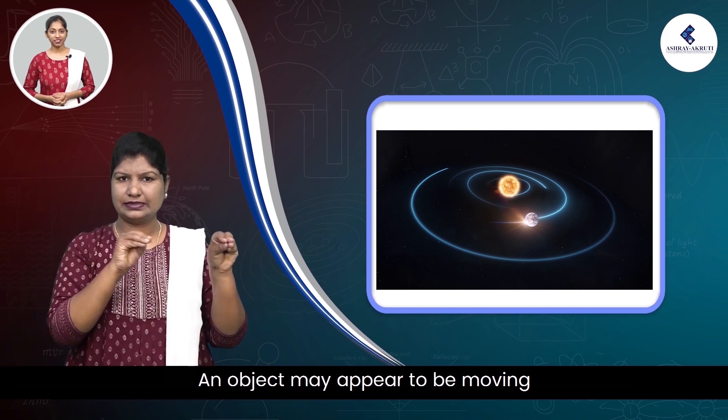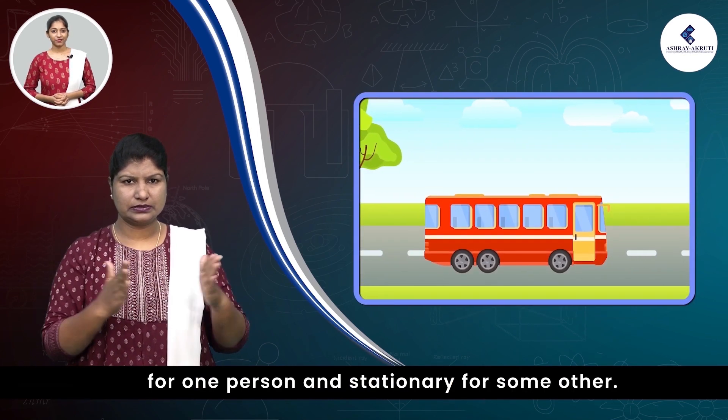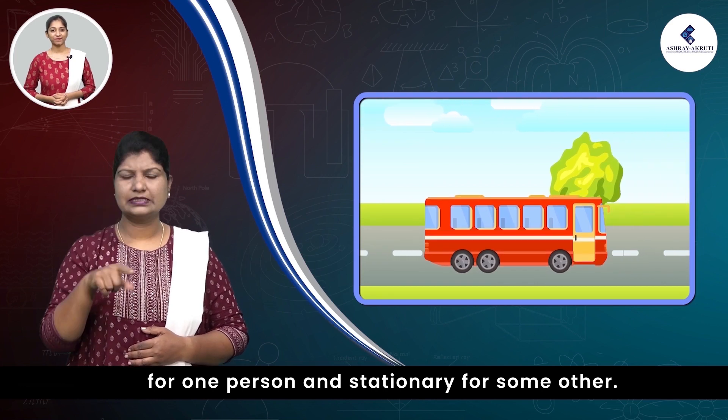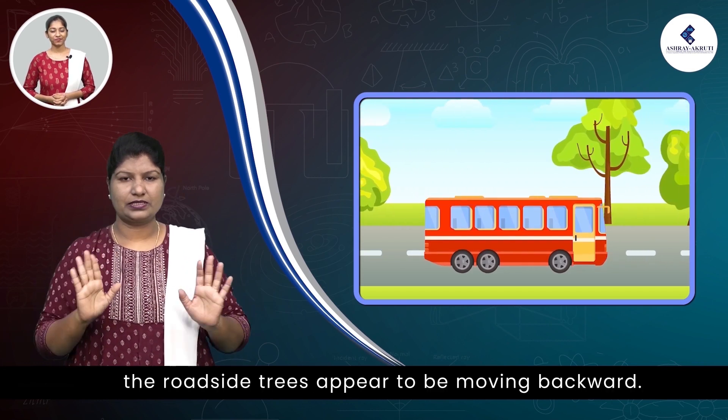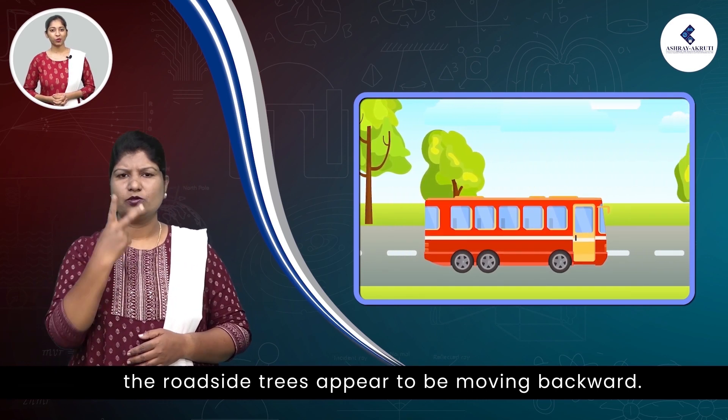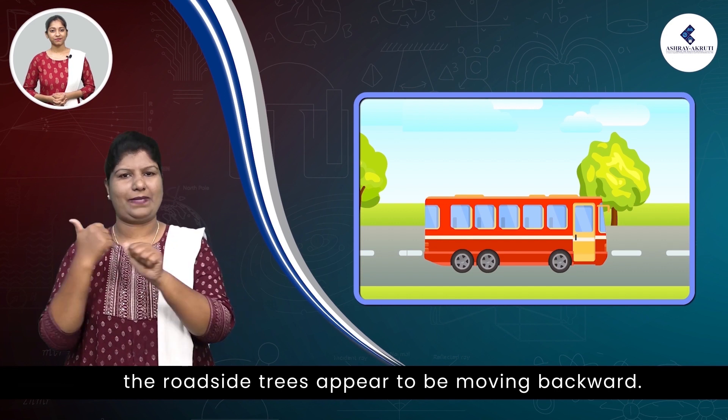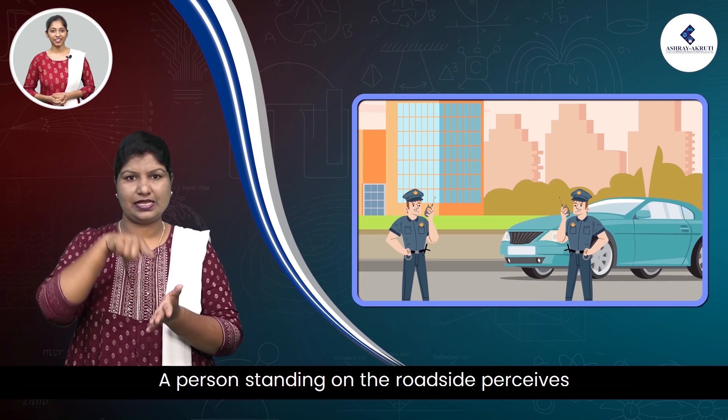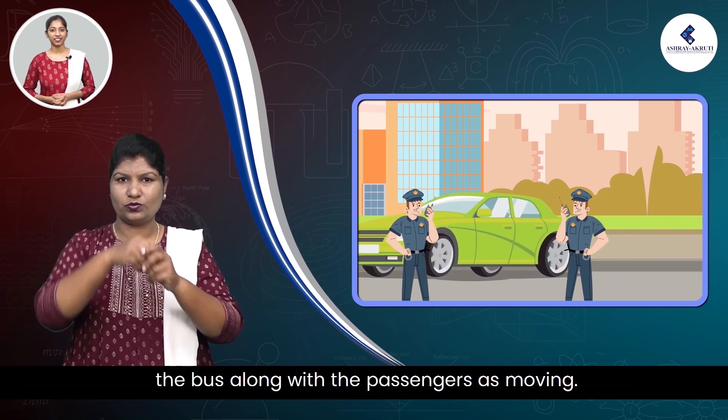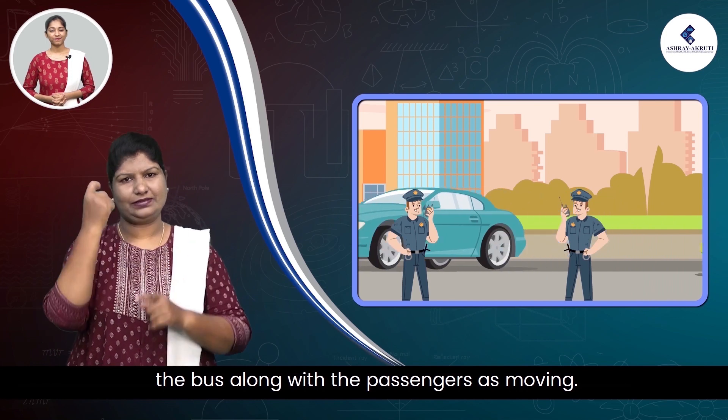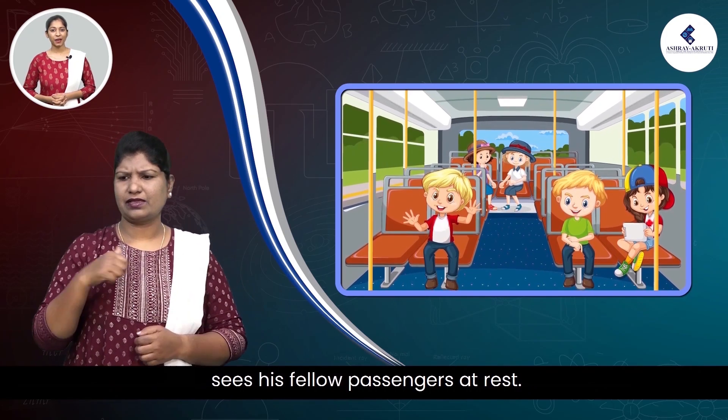An object may appear to be moving for one person and stationary for some other. For the passengers in a moving bus, the roadside trees appear to be moving backward. However, a passenger inside the bus sees his fellow passengers at rest.